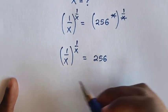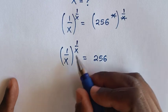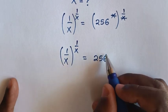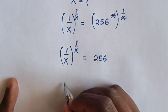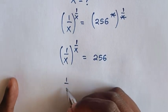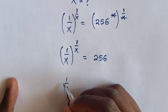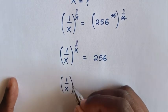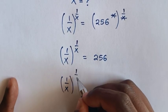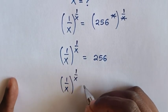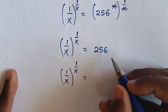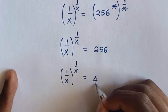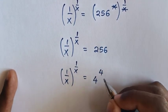Now, because here we have same base and same power, and this we make with same base and same power, so it will be: 1 over x, bracket power of 1 over x, is equal to 256, which is the same as 4 power of 4.